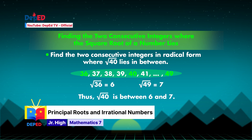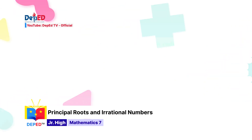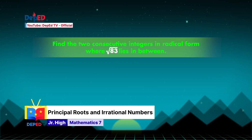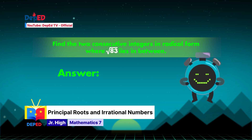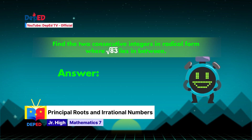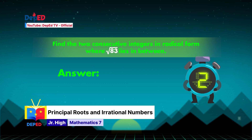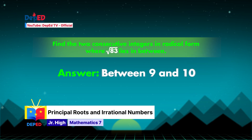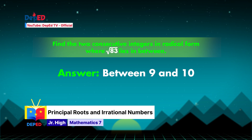It's your time to answer this. Find the two consecutive integers in radical form where the square root of 83 lies in between. Timer! If your answer is between 9 and 10, you got it right!